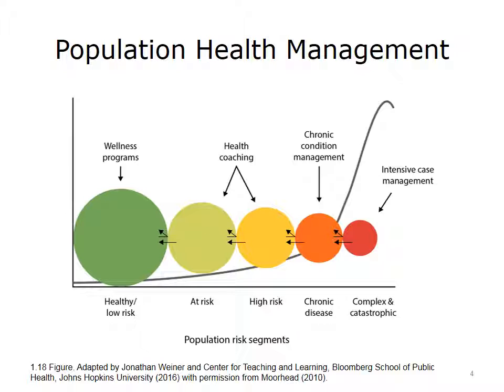The Professional Trade Association of these organizations, which used to be called the Disease Management Association of America, changed its name to the Care Continuum Alliance, and recently they changed their name again to Population Health Alliance. This sequence represents the new appreciation of mainstream medicine and health insurance companies for the field of population health.